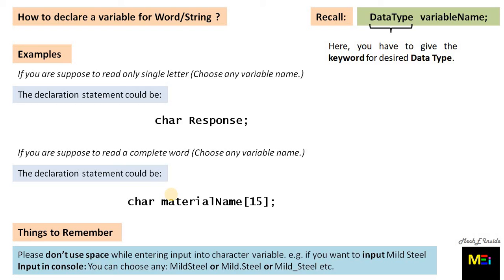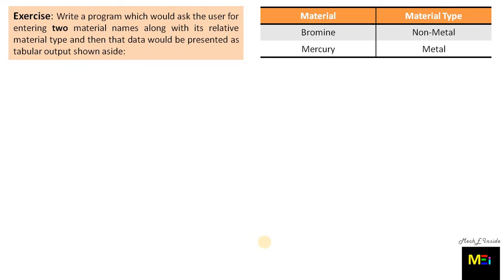An important thing to remember when using character array variables with scanf: do not use spaces while entering input. For example, to input 'mild steel,' you can write it as 'mildsteel,' 'mild.steel,' or 'mild_steel' — without any blank spaces. Now pause the video and try to solve the exercise.